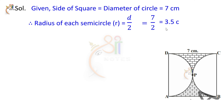Simplifying, the radius equals 3.5 centimeters. We have 1 square and 2 semicircles in this figure.